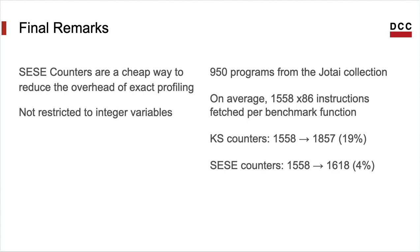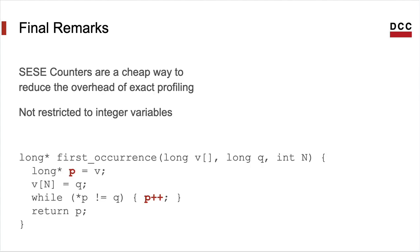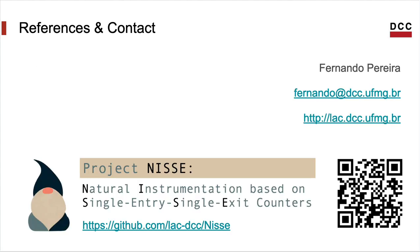Note that CIS counters are not restricted to integer variables — for instance, the pointer p in this program is a CIS counter which our implementation is able to reuse. This implementation is available for public usage in our repository, and we welcome people to check out the code and contribute to it. Thank you very much.